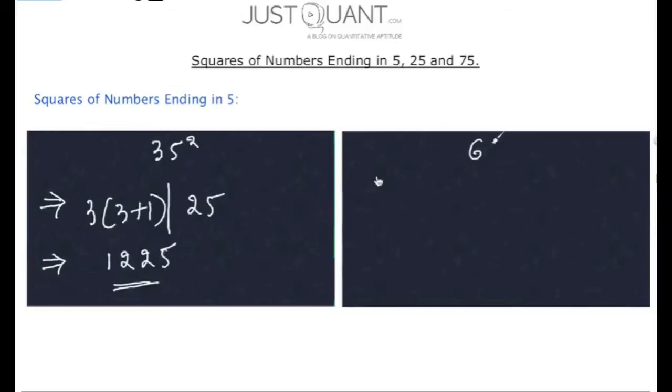Now consider 65 square. The right part, as we have seen earlier, will always be 25, and the left part will be 6 multiplied by a number which is 1 more than 6. That is 7. Therefore, the left part is 6 times 7, which is 42, and the solution is 4,225.